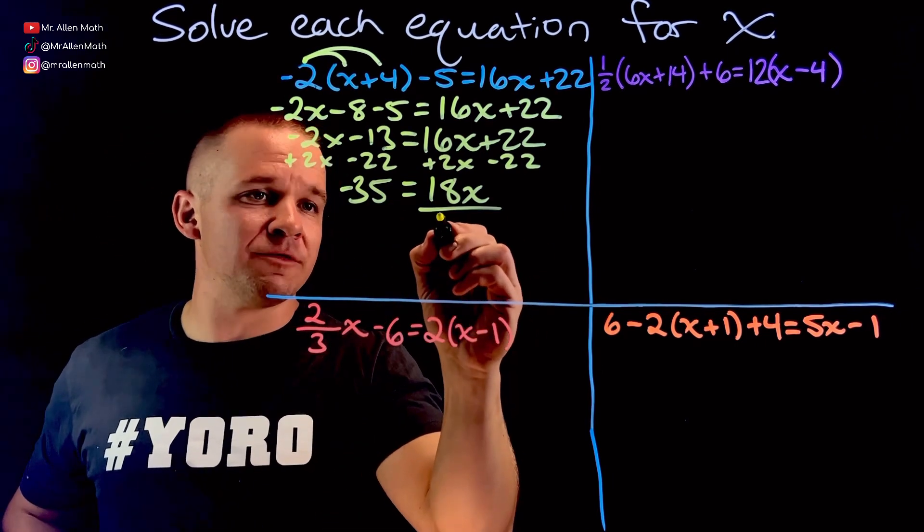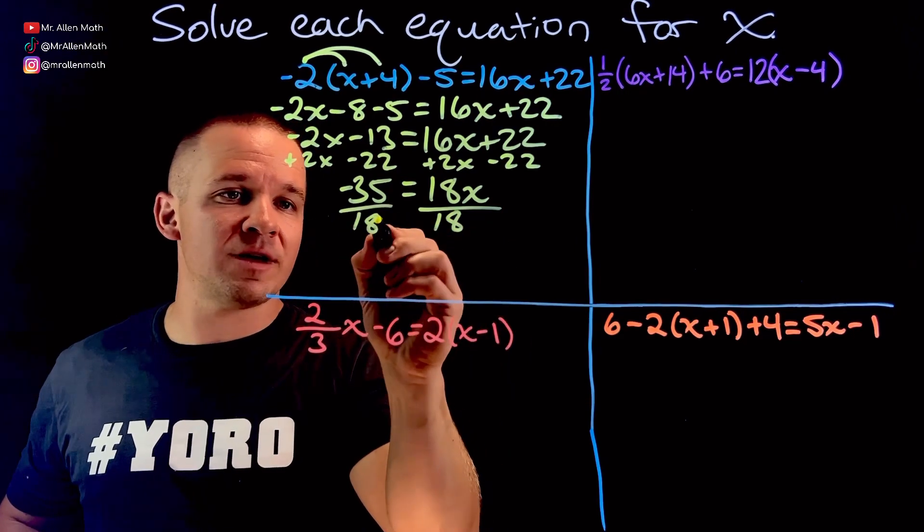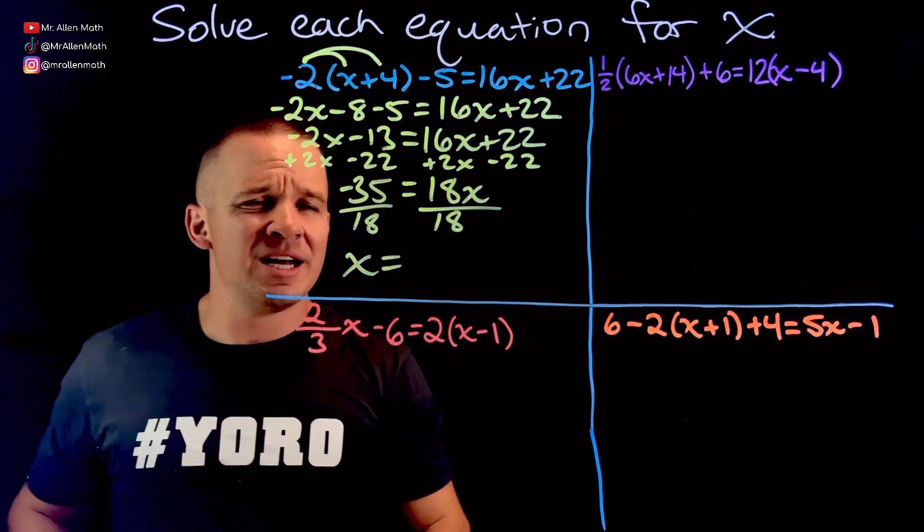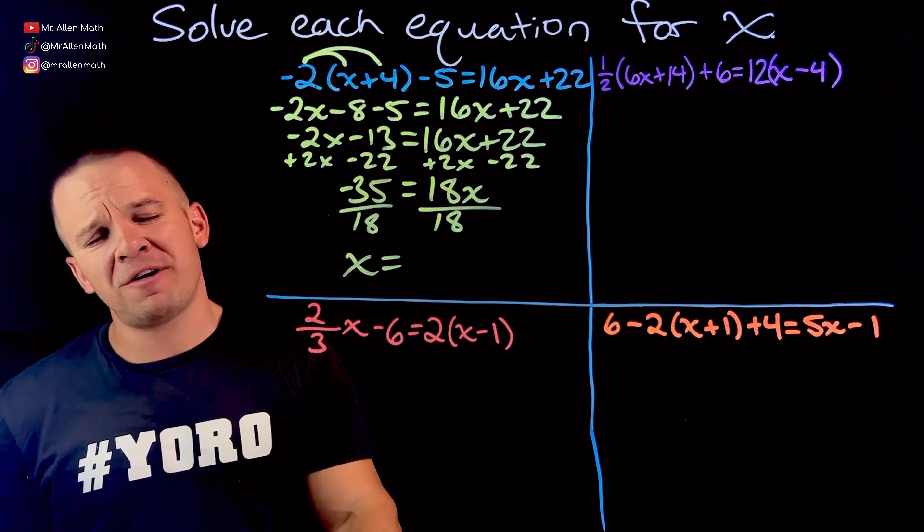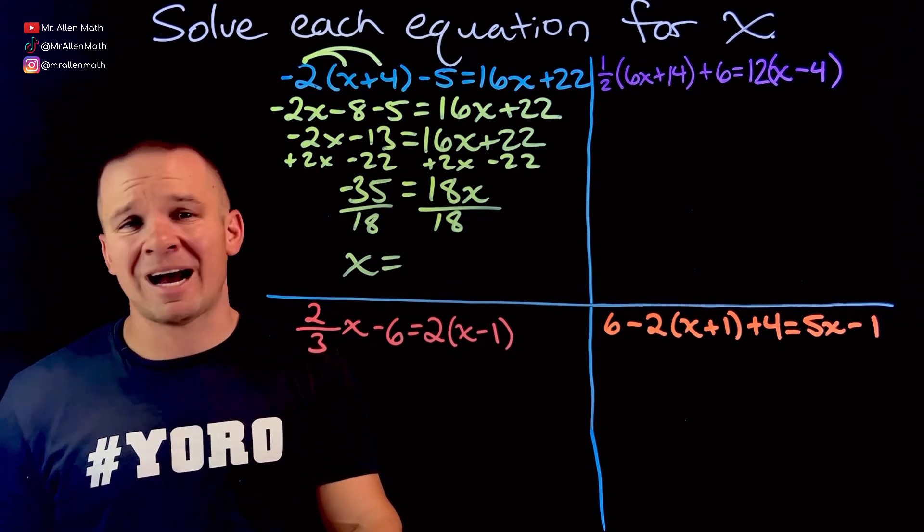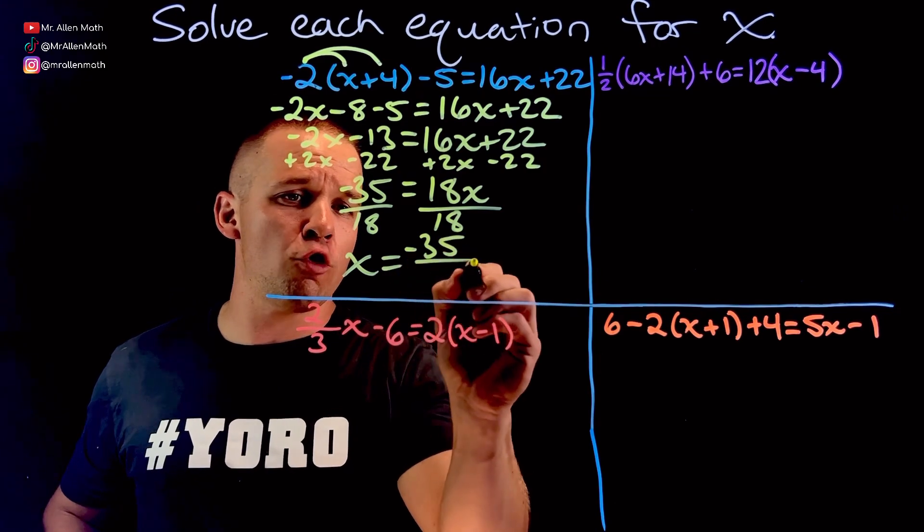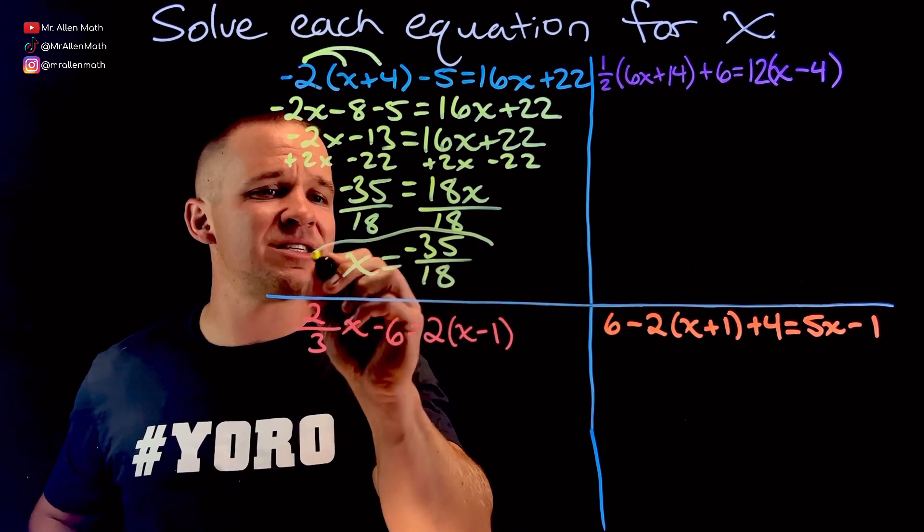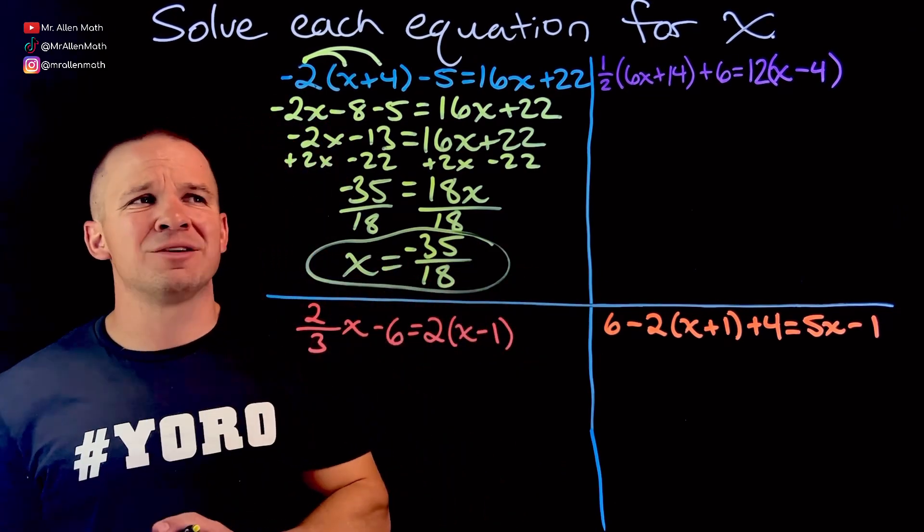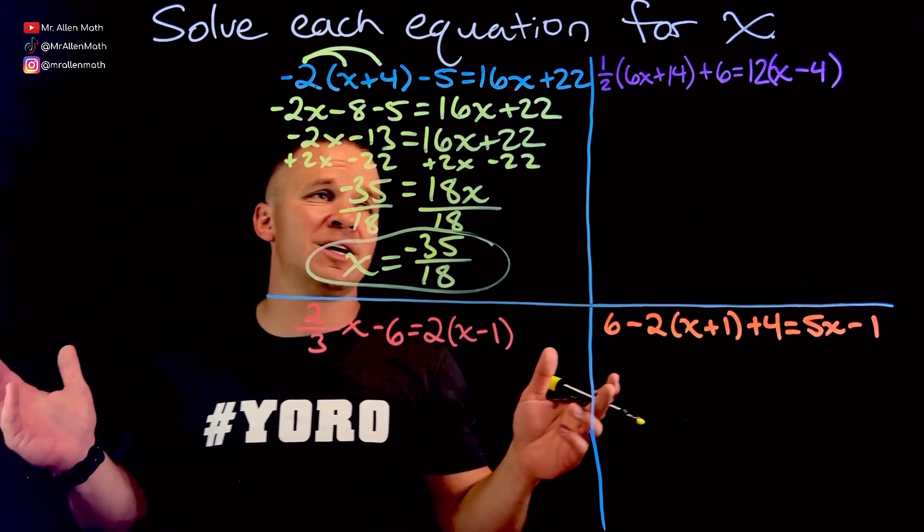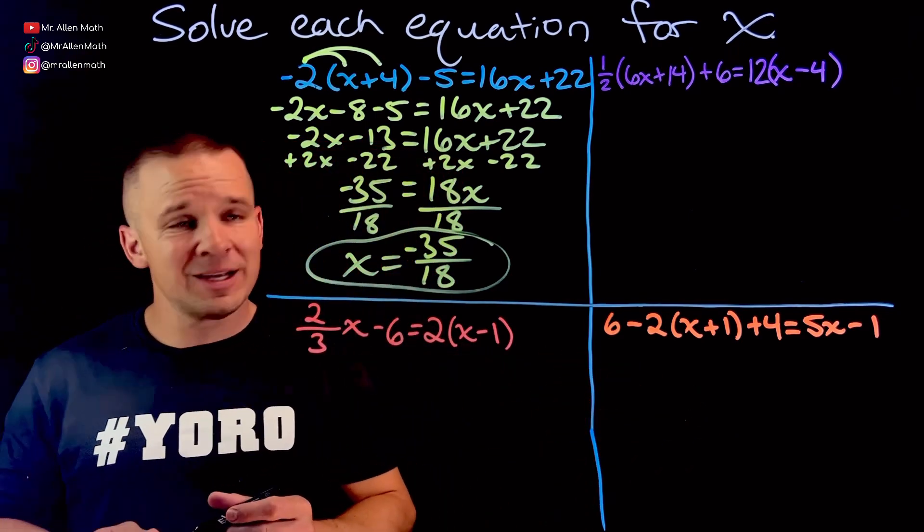We're going to divide by 18, and I get x equals negative 35 over 18. 35 is divisible by 5 and 7. Neither of those work with 18, so we're just going to leave it as negative 35 over 18. Not a very satisfying answer there when we get those nasty fractions, but it is what it is. We're going to roll with it.